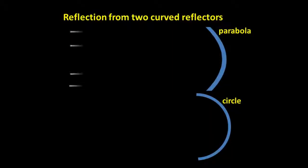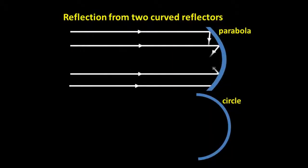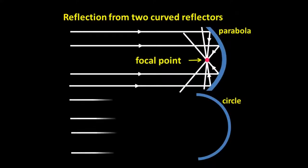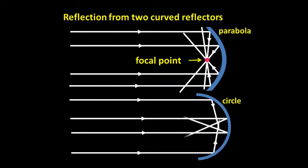Only a parabola can focus incoming light beams to a definite focal point. Circular reflectors kind of focus the light, but not really all that well.